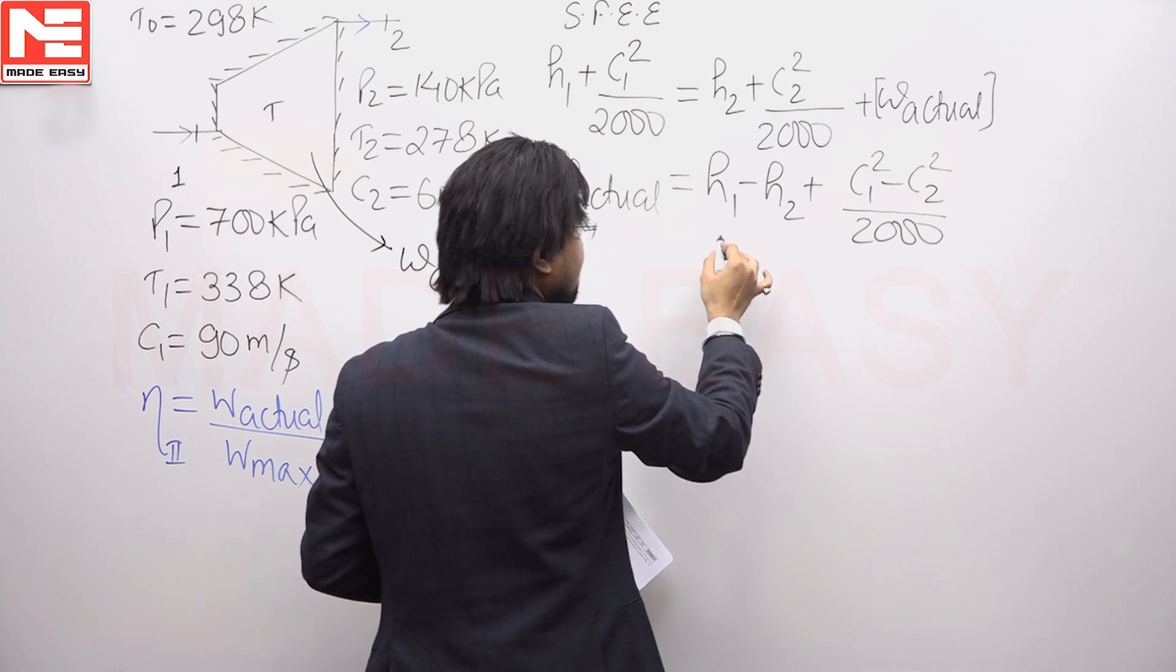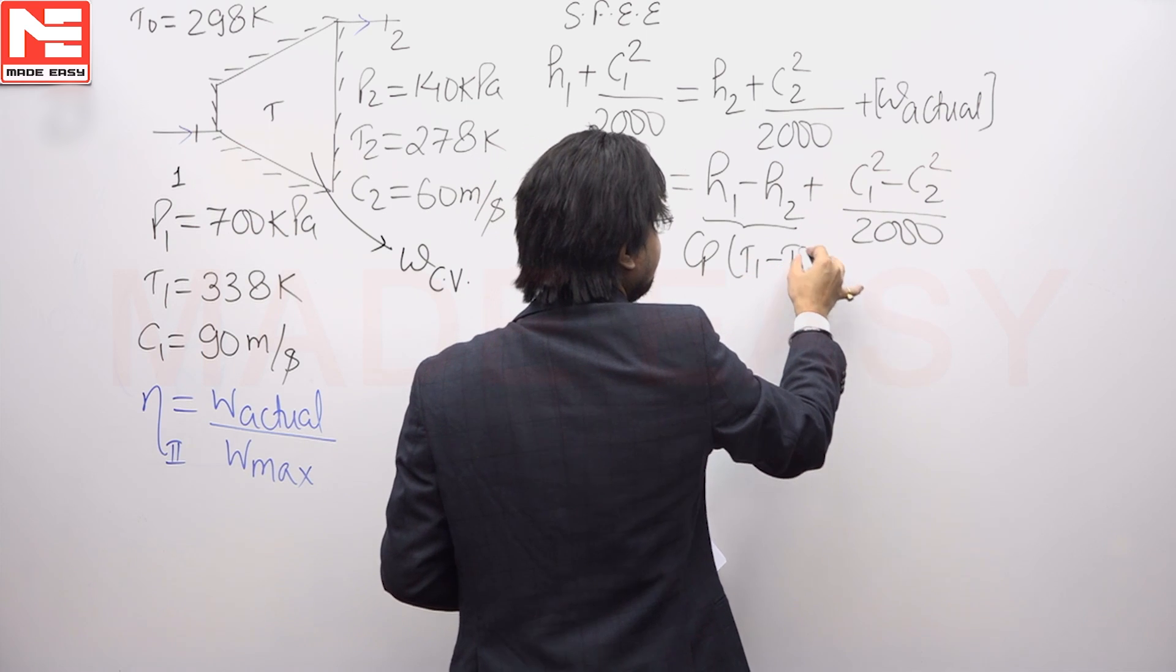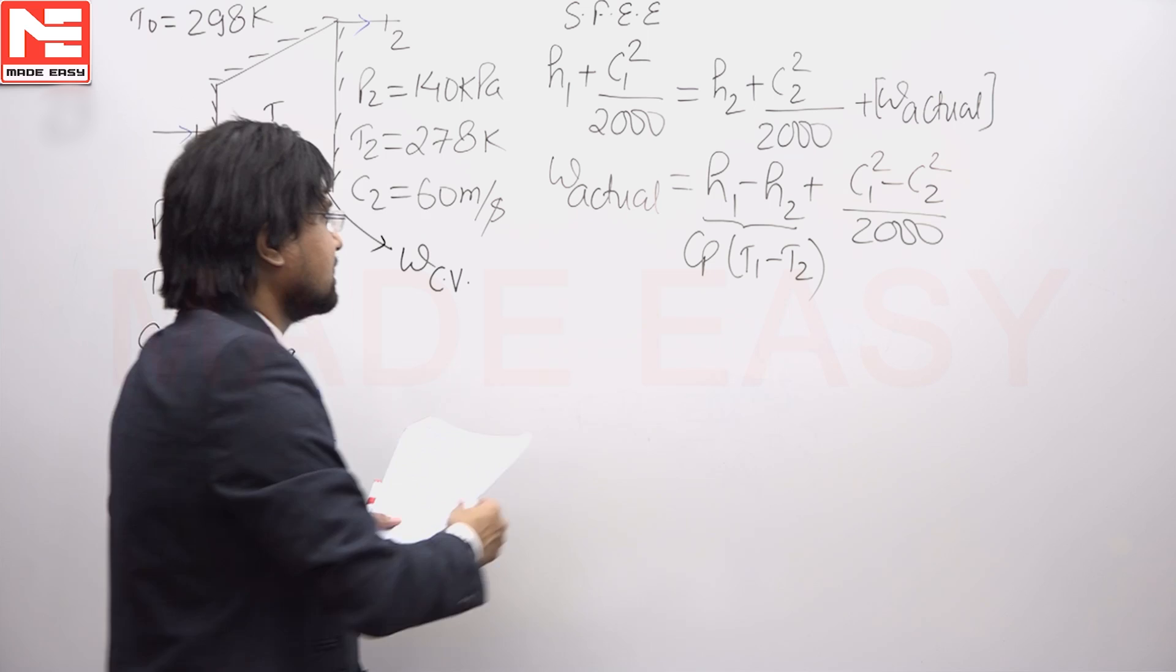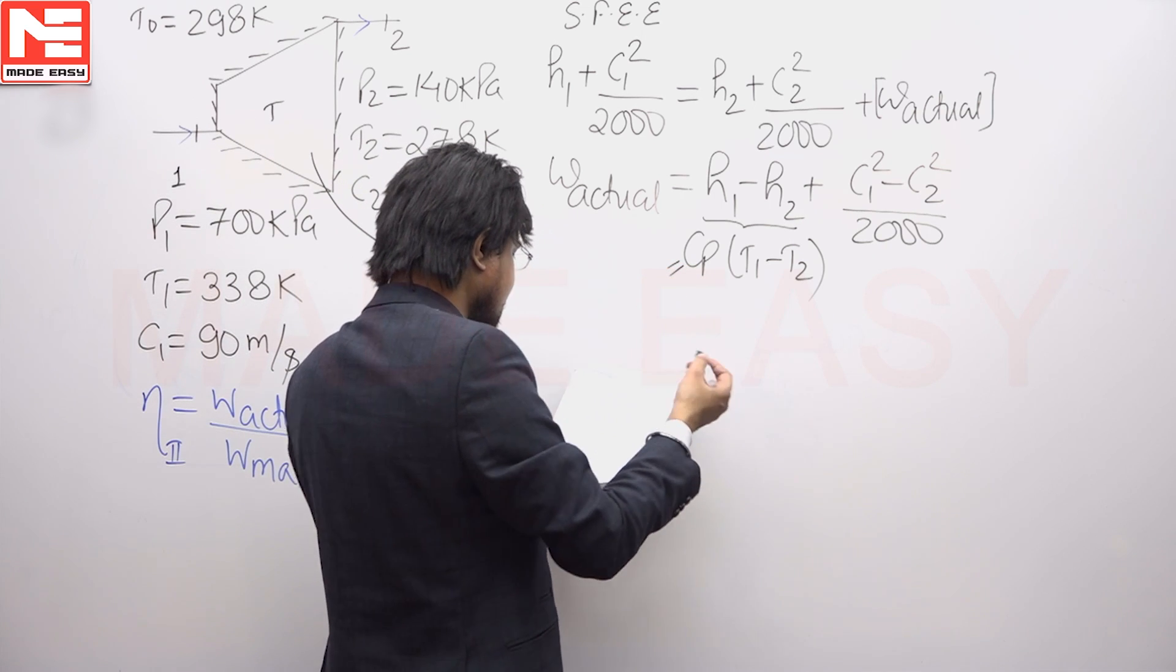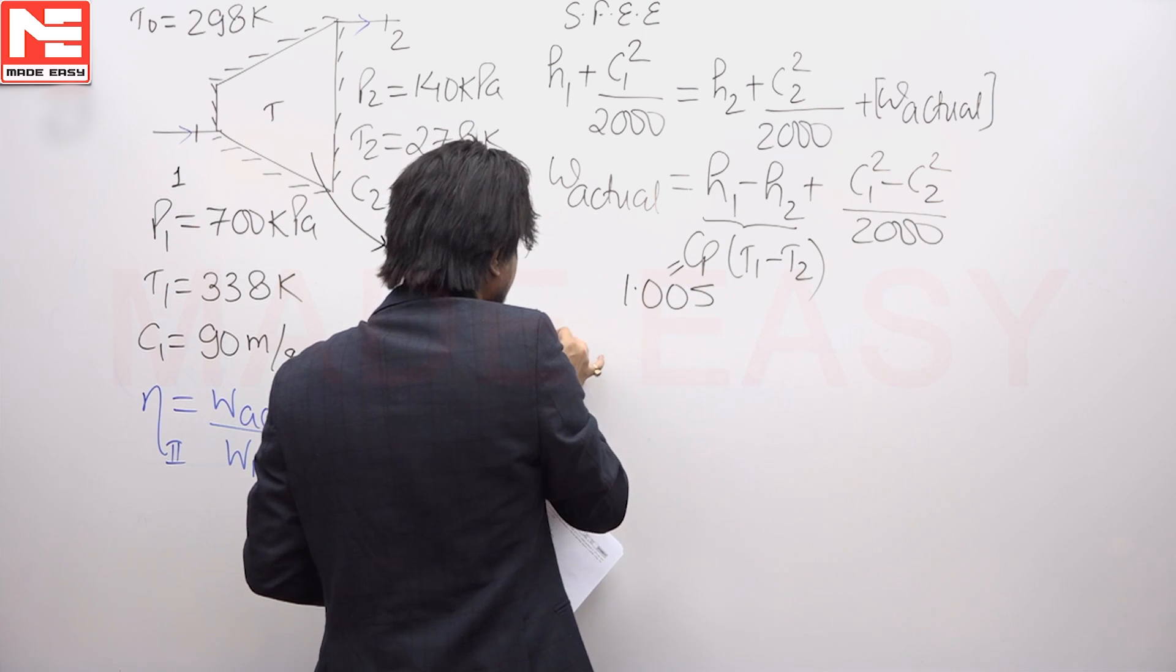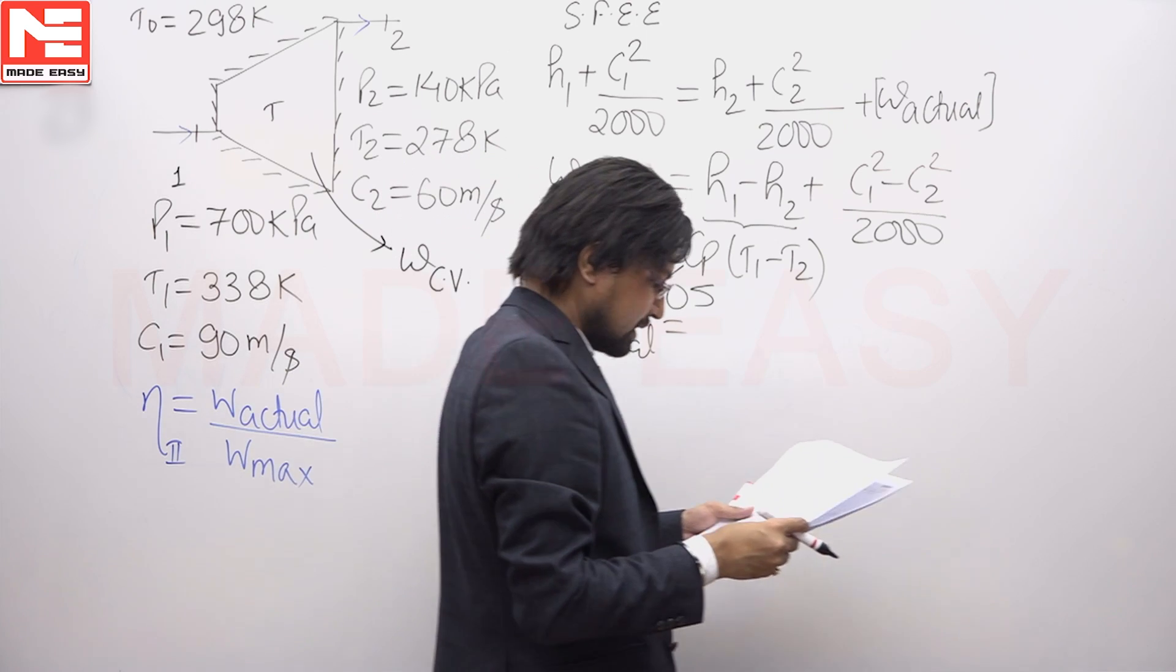H1 minus H2 can be written as Cp into T1 minus T2, and the values of velocity, temperatures are given to us, air is given to us. For air we know Cp is 1.005, so actual work can be found out from here.